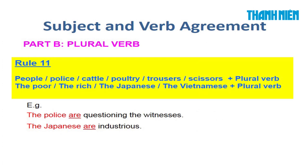Rule number 11: Những danh từ luôn luôn là số nhiều: People (nhiều người), Police (cảnh sát), Cattle (gia súc), Poultry (gia cầm), Trousers (quần — có 2 ống), Scissors (có 2 lưỡi). Ngoài ra, những tính từ đi với mạo từ 'the' để chỉ một nhóm người như: the poor, the rich, the young, the old, the Japanese, the Vietnamese — cũng chia plural verb. Ví dụ: 'The police are questioning the witnesses'; 'The Japanese are industrious.'